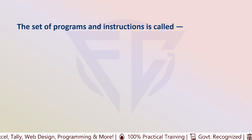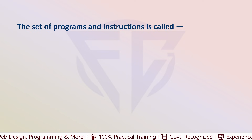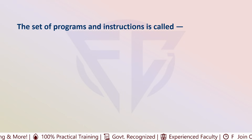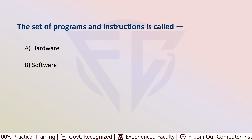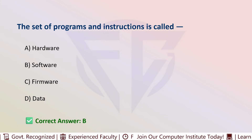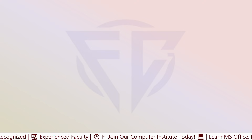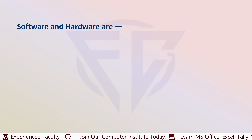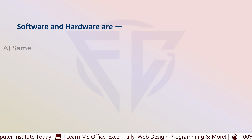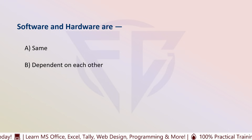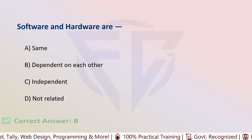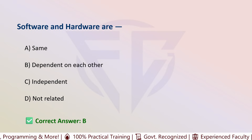The next question is: the set of programs and instructions is called — options are: A) Hardware, B) Software, C) Firmware, and D) Data. The correct answer is B, that is software. The next question: software and hardware are — options are: A) Same, B) Dependent on each other, C) Independent, and D) Not related. The correct answer is B, they depend on each other.